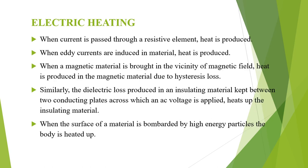The different types of electric heating methods are: when current is passed through a resistive element, heat is produced because of I²R loss. When eddy currents are induced in the material, heat is produced. When a magnetic material is brought in the vicinity of a magnetic field, heat is produced in the magnetic material due to the hysteresis loss.